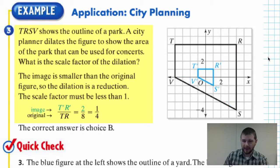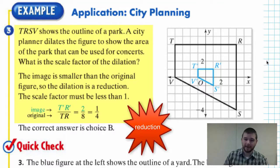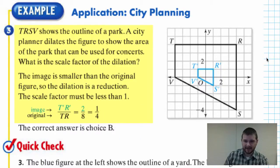Well, one thing we notice right away is that the post image version, our quadrilateral there in the center, the blue one T prime R prime S prime V prime, is smaller, so our scale factor is going to be less than one. It's going to be a reduction, right, a type of dilation called a reduction. Now to find the scale factor.